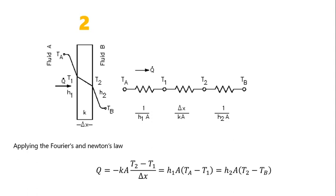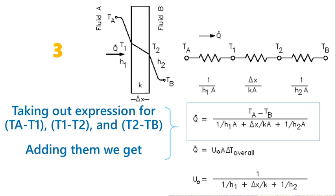On the fluid B side, Q = H2·A·(T2 − Tb), where H2 is the heat transfer coefficient, T2 is the surface temperature on the fluid B side, and Tb is the temperature of fluid B. Combining both expressions and solving for Q by adding the temperature differences (Ta − T1), (T1 − T2), and (T2 − Tb), we get the overall heat transfer: Q = (Ta − Tb) / (1/H1A + ΔX/KA + 1/H2A).